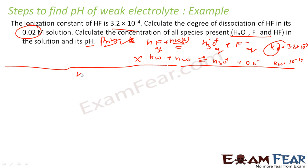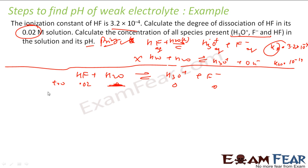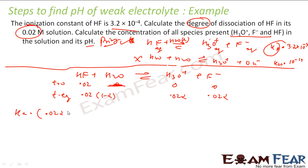So the primary reaction is: HF + H₂O → H₃O⁺ + F⁻. At t = 0, we have 0.02 M HF and 0 for both products; H₂O is a pure liquid and is ignored. At equilibrium, HF becomes 0.02(1 − α), H₃O⁺ becomes 0.02α, and F⁻ becomes 0.02α, since alpha is the degree of dissociation. Ka = (0.02α)(0.02α) / (0.02(1 − α)).